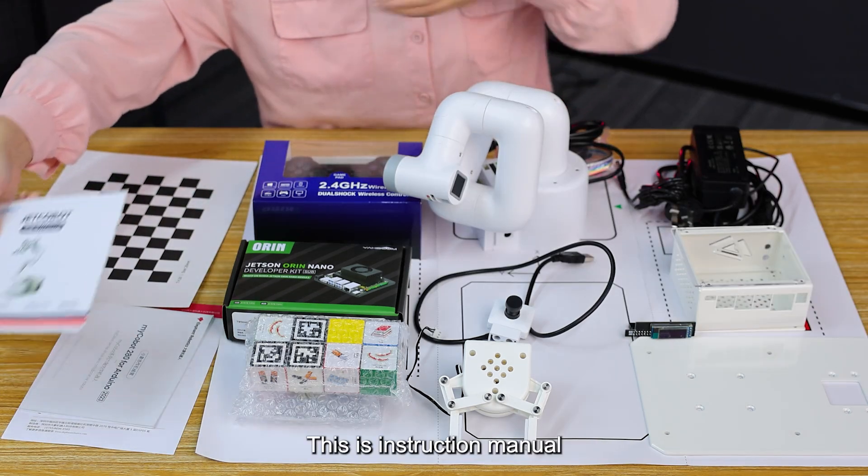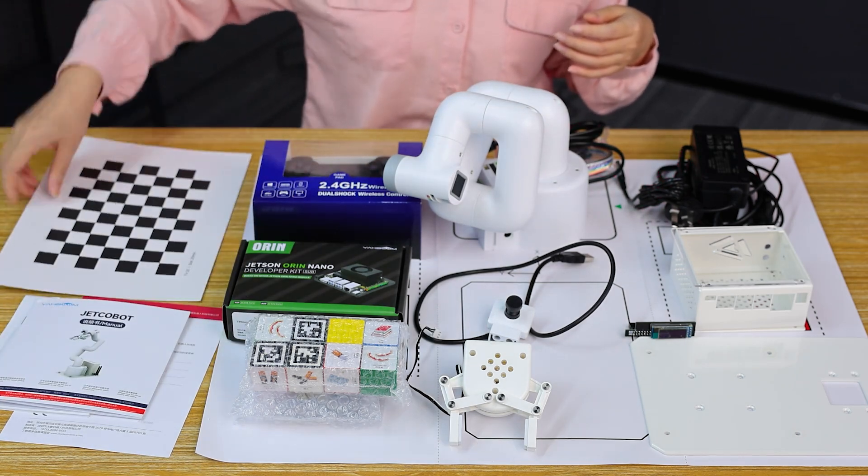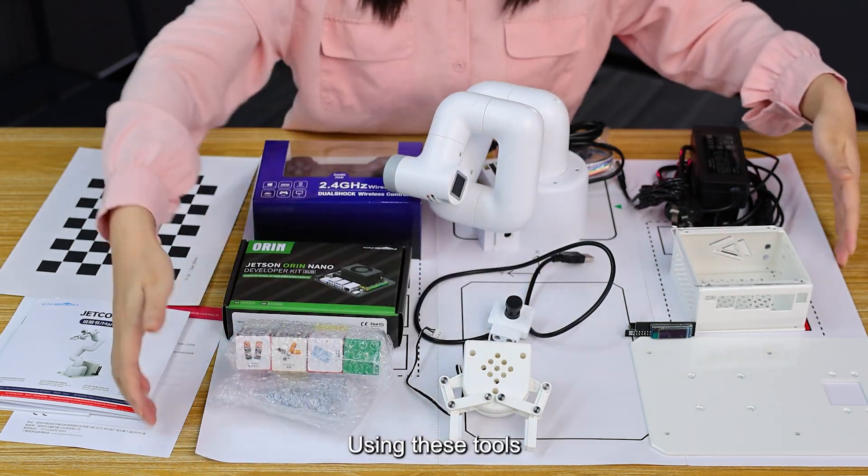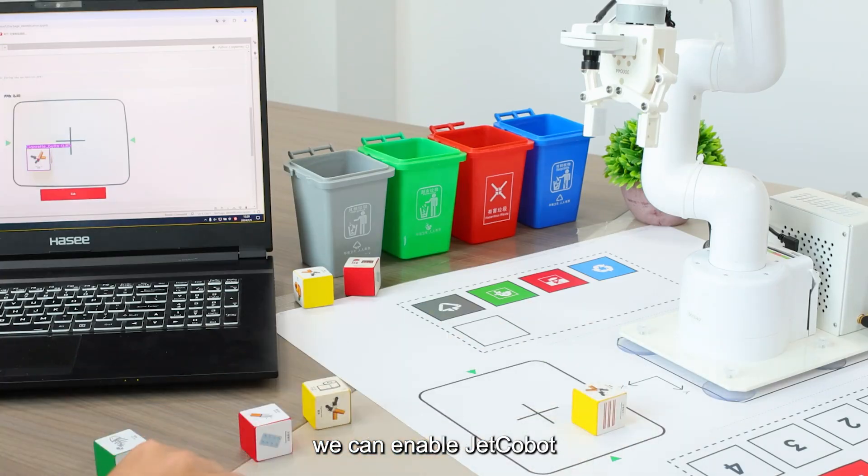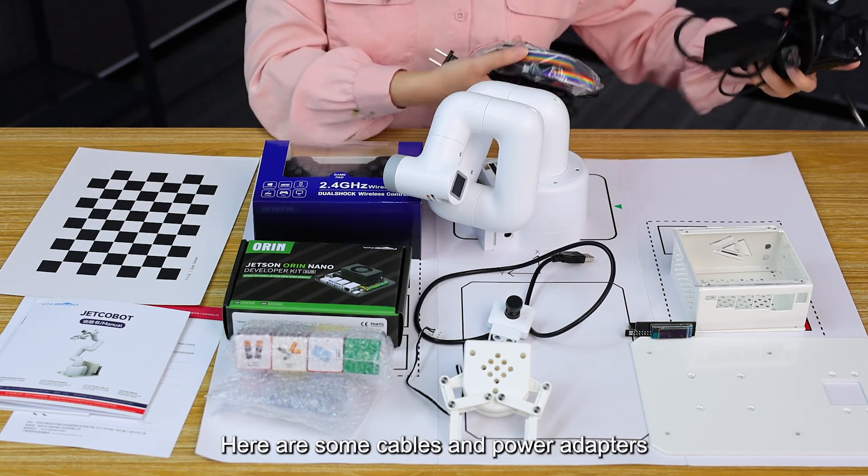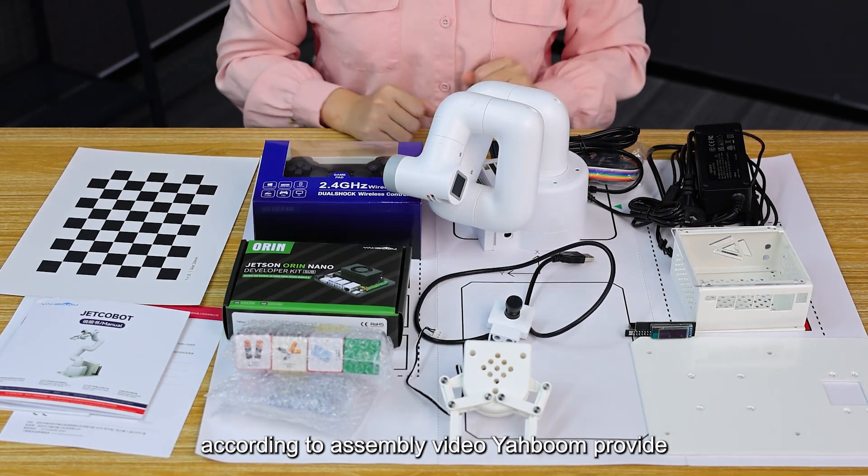This is the instruction manual, checkerboard paper, color blocks, suction cup, and a map. Using these tools, we can enable JetCobot to perform some visual recognition functions. Here are some cables and power adapters. You can complete the assembly according to assembly video provided by the manufacturer.